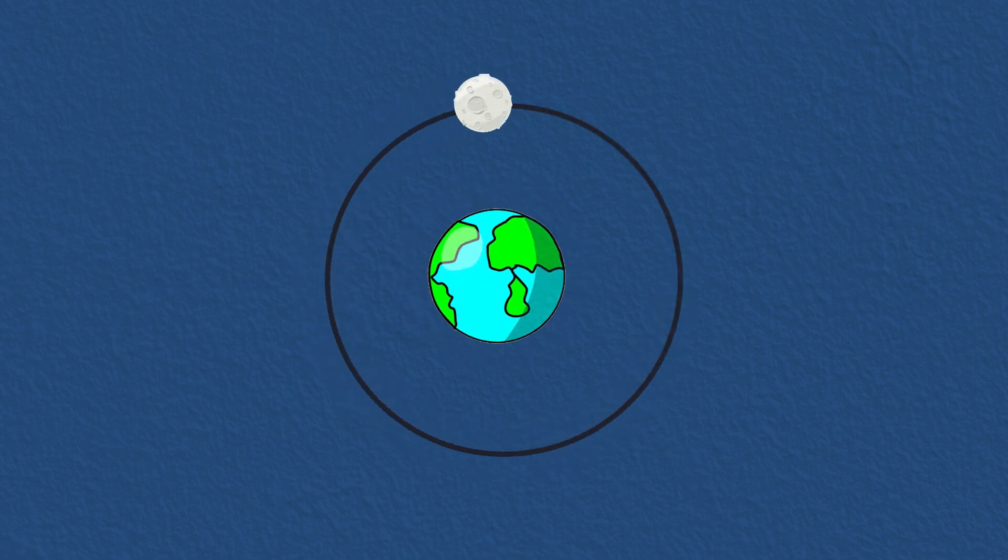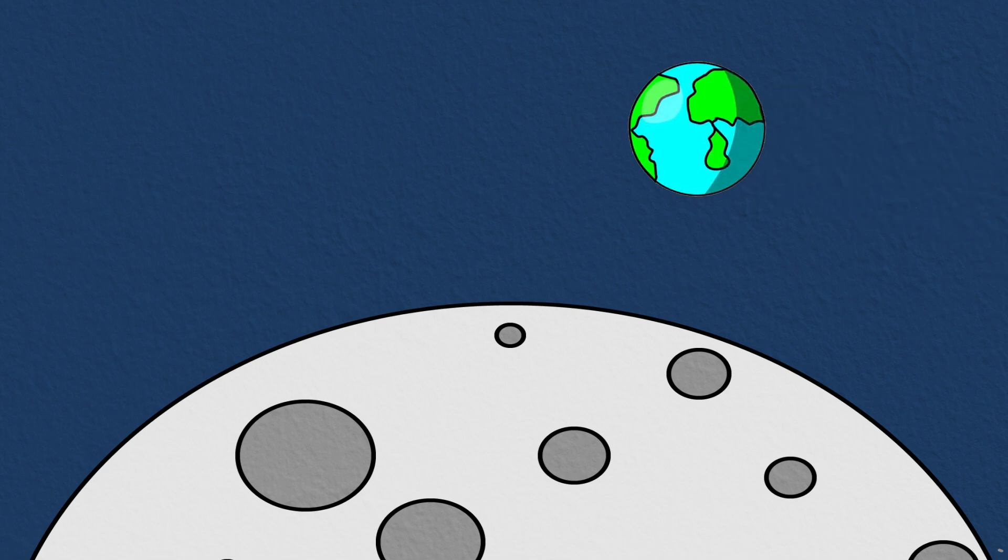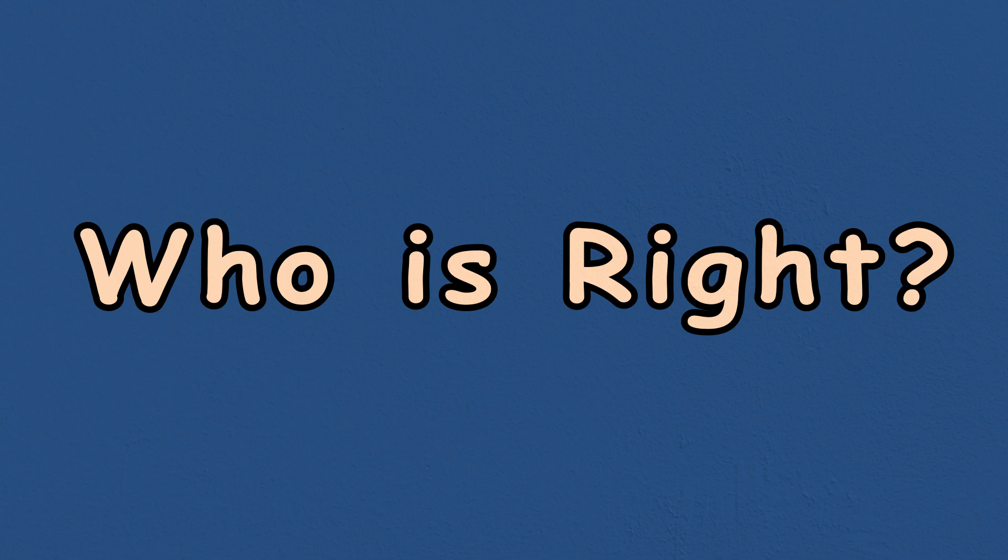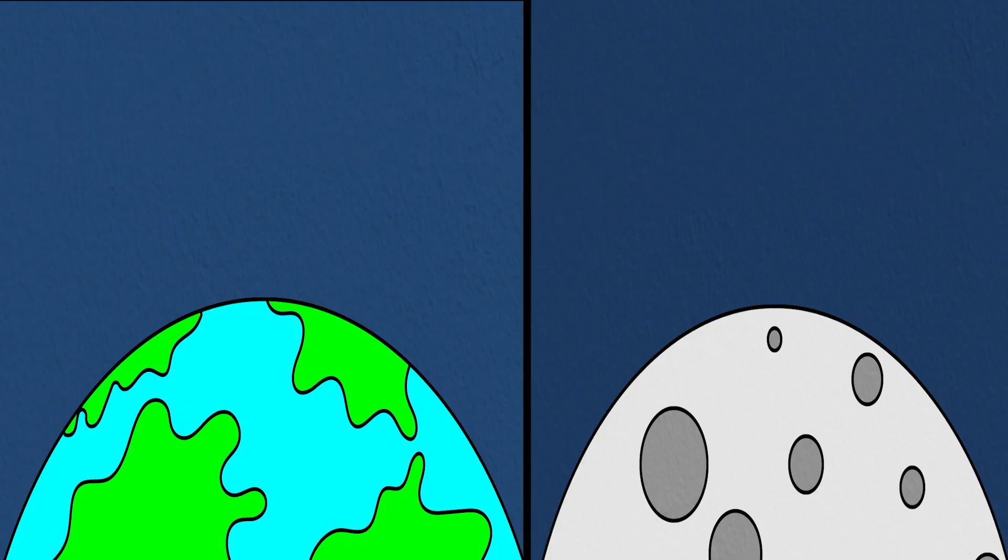Rule number one: all motion is relative. Now take this Earth and Moon for example. If you are on the Moon, then the Earth is revolving around you. But if you are on the Earth, then the Moon is revolving around you. Which perspective is right? Is there a preferred perspective?